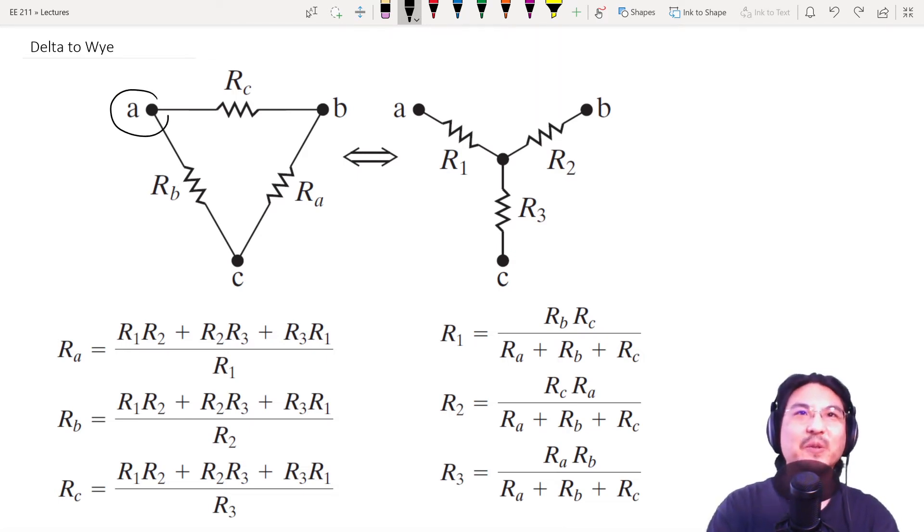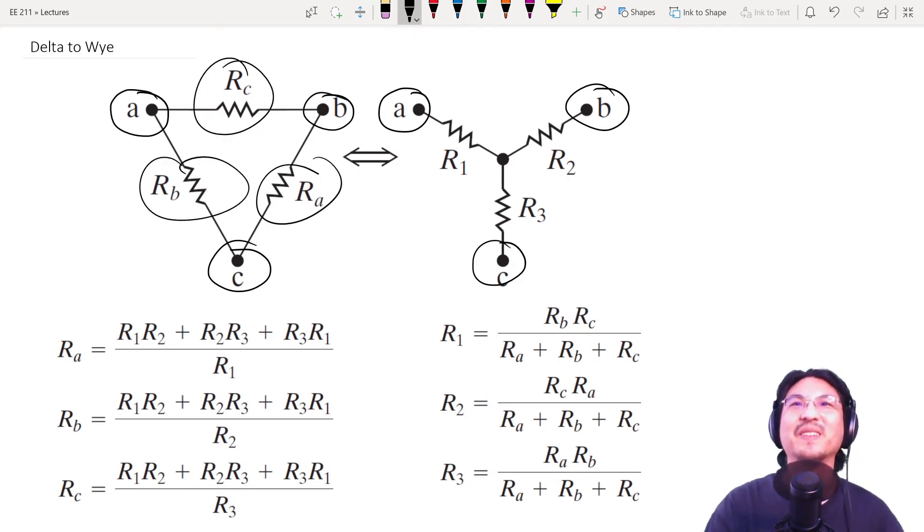And just note that, see how there's nodes A, B, C? Those nodes don't move. The resistors connecting the nodes, you can change them back and forth at will and they're equivalent, as far as nodes A, B, and C are concerned. These nodes don't care what's going on in between them.